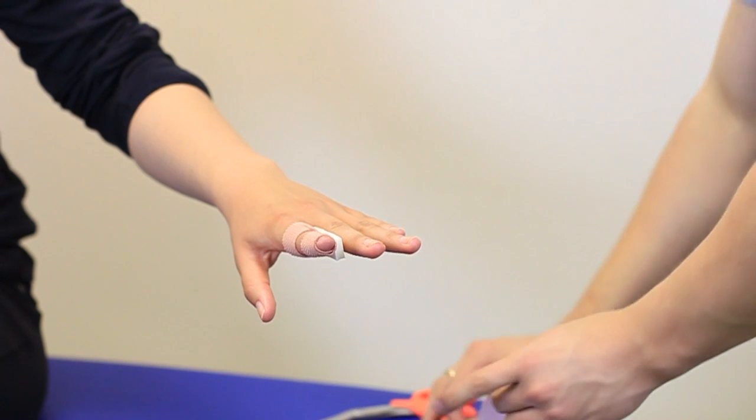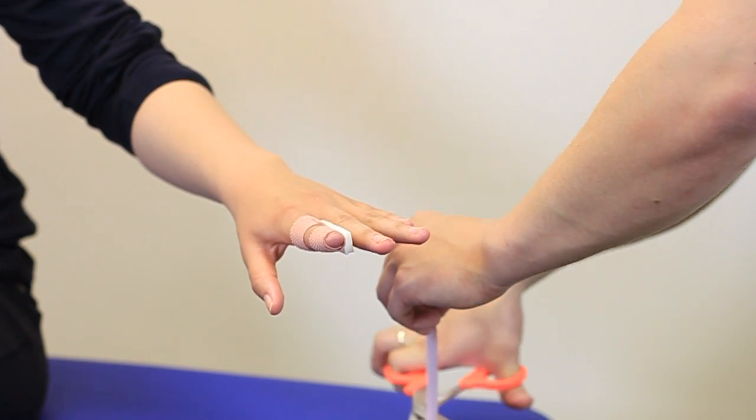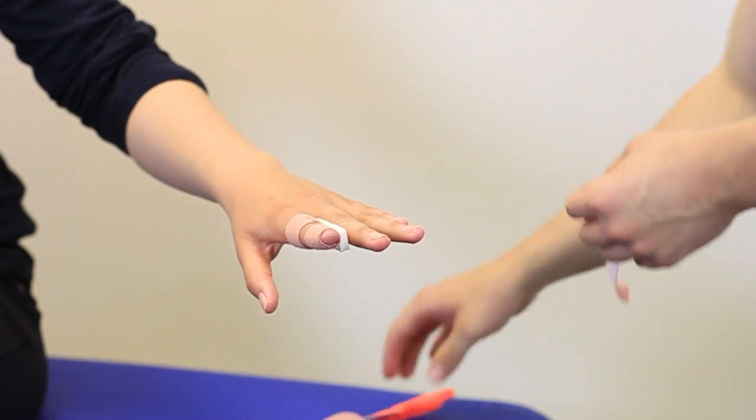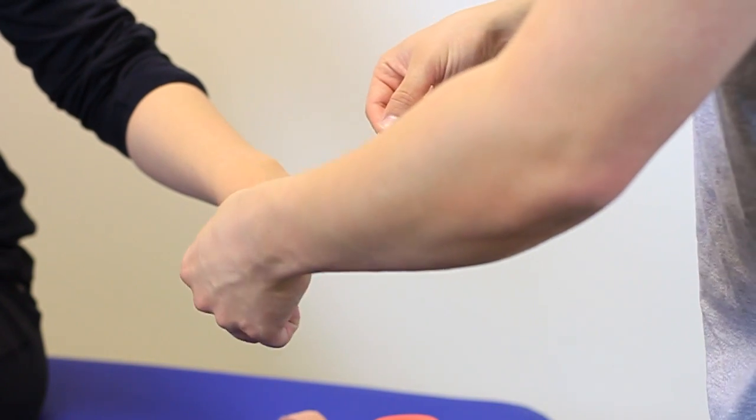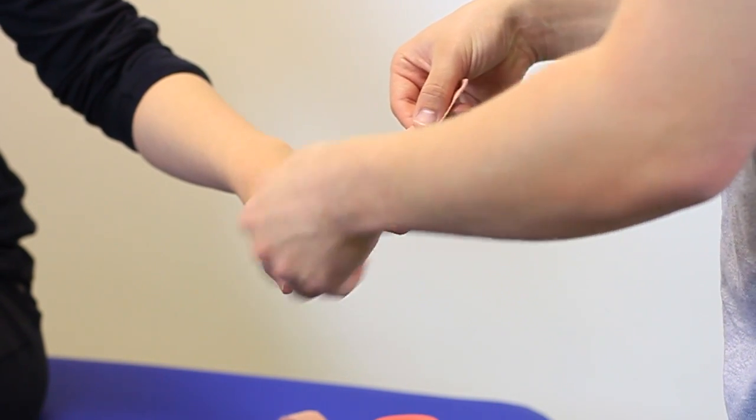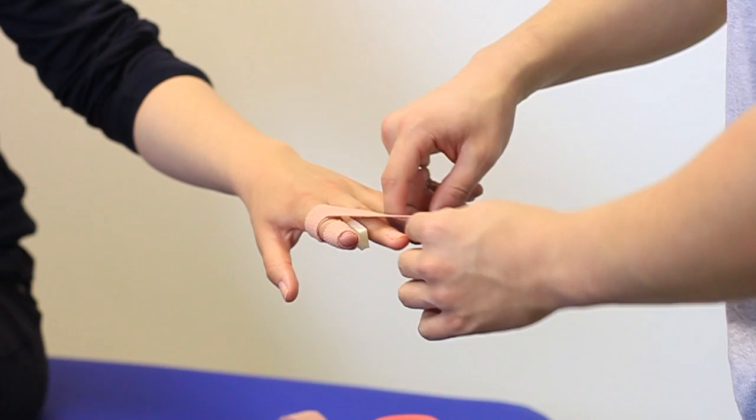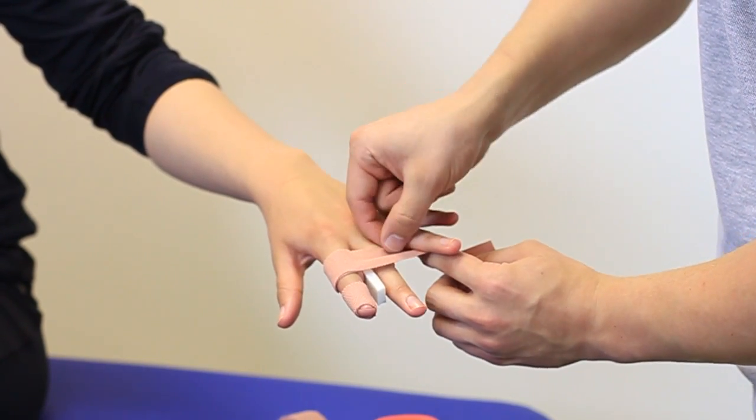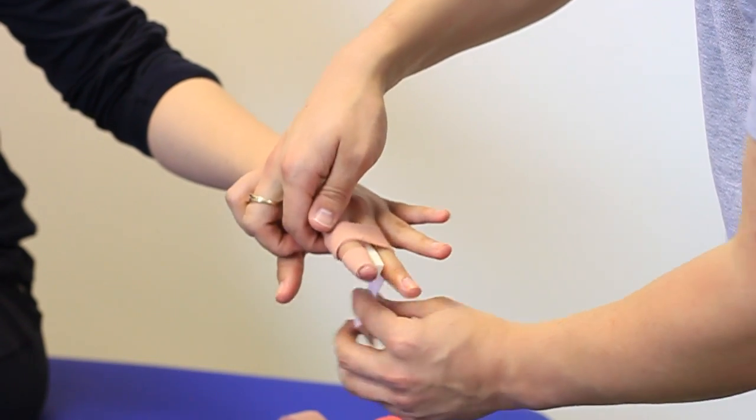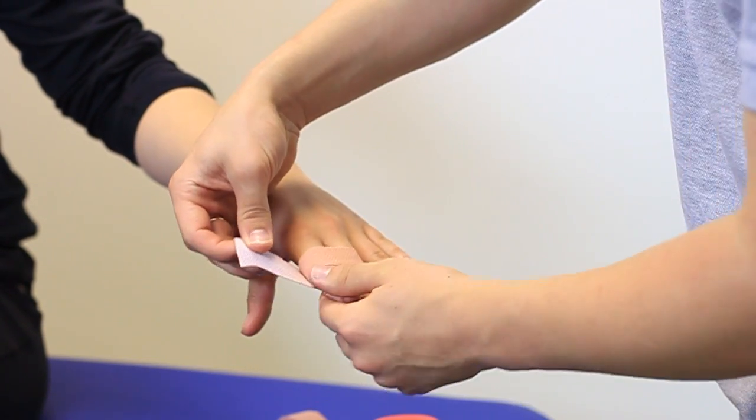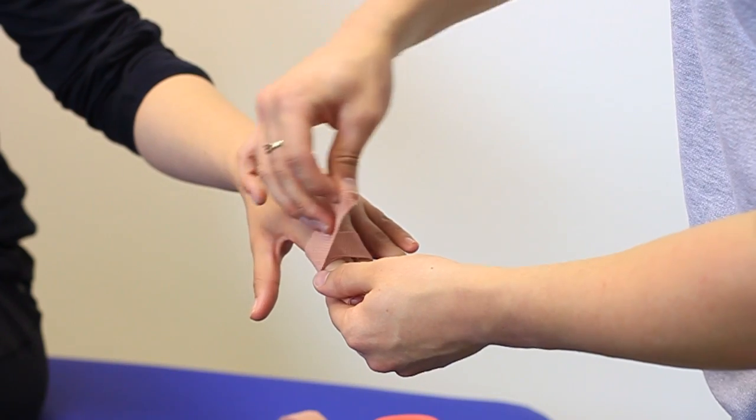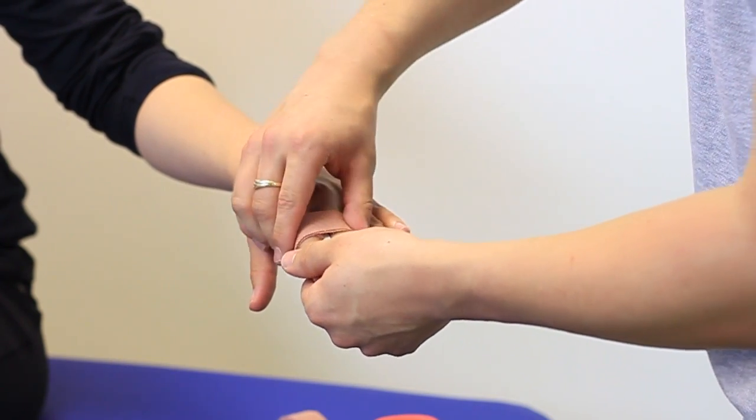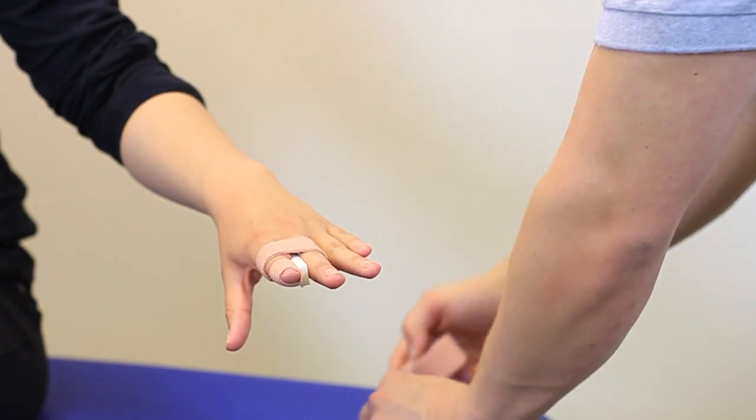We're putting the foam pad between the two fingers, cutting another piece of the pink finger tape and we're strapping both fingers together this time. Make sure there's a little bit of a stretch applied and the fingers are nicely tightened together.